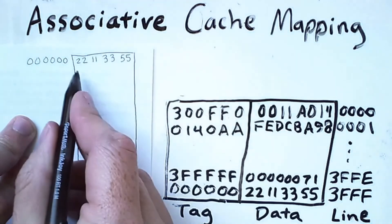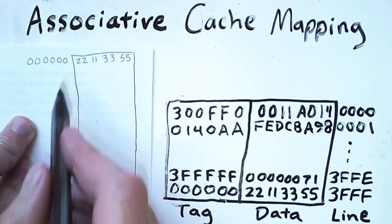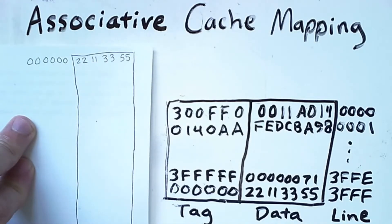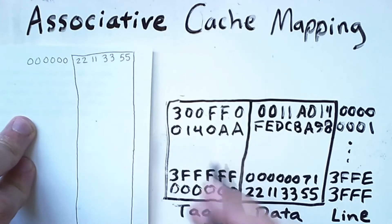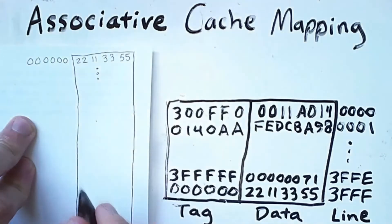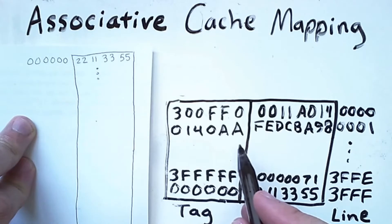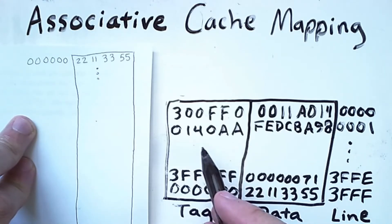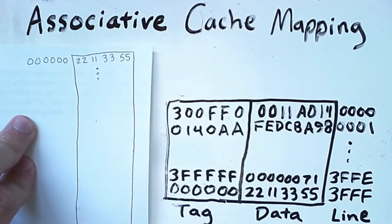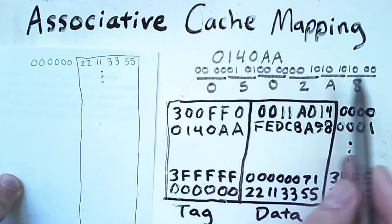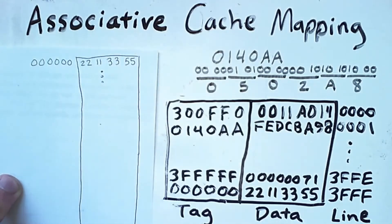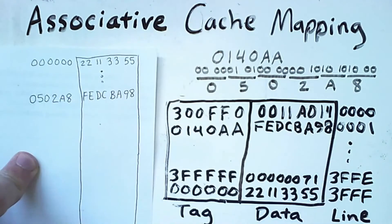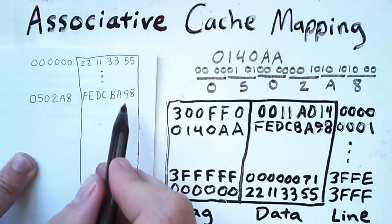So we already know that these are the contents in memory starting at address 0. Let's fill out some more memory contents based on the contents of our cache. The next highest tag that we can see in the cache is the 0140AA. So that would appear somewhere down the line here. However, keep in mind that we have two bits for the word at the end of our memory addresses, so we have to shift this tag over by two positions to find out what the corresponding hex value would be in the address. So if we take the original tag value in hex, expand it into binary, and then shift over by two, we get this hex value. So that is the memory address. And the contents of memory at that address come from here. And just a reminder that this particular hex address only refers to the byte 98.